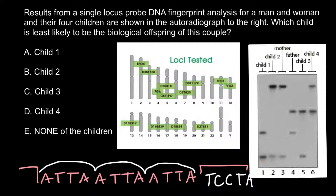Using those flanking sequences, we can construct primers and amplify the fragment between them. Using PCR we can make millions of copies of this fragment. When we run a gel, fragments of different sizes separate. In the CODIS system we examine 13 different sites, giving up to 26 alleles. If the number of repeats on both homologous chromosomes is the same, we see only one band.